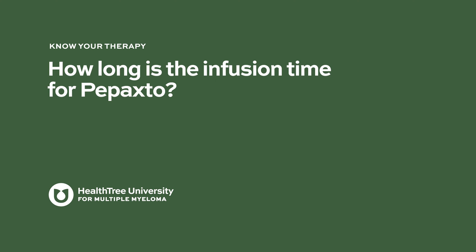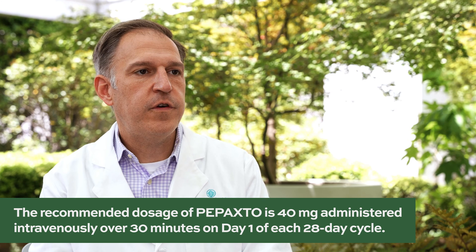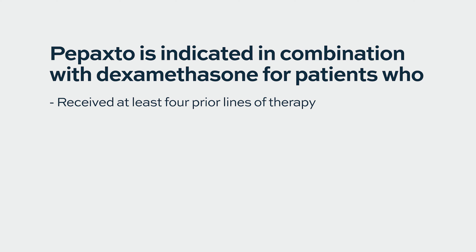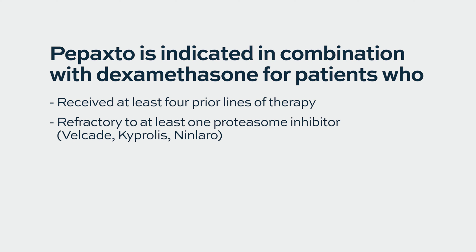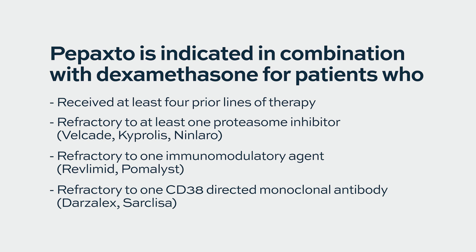How long is the infusion time for Pepaxto? Melphalanflufenamide is given as a flat 40 milligram dose and the IV infusion is over 30 minutes. The FDA accelerated approval indication for melphalanflufenamide with dexamethasone covers patients who have relapsed multiple myeloma and have received four prior lines of therapy — patients who have seen proteasome inhibitors such as bortezomib, carfilzomib, and ixazomib, immunomodulatory drugs such as lenalidomide and pomalidomide, and CD38 antibodies such as daratumumab and isatuximab.